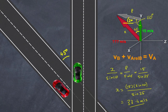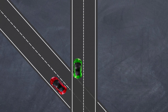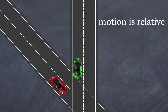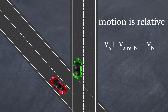So there you have it. In summary: all motion is relative — any motion that is measured is measured relative to your frame of reference. However, if there is motion in one frame of reference and also motion in another, you can determine the relative motion between those two frames using the formula shown. I hope that helps you with relative motion. I'm Paul from High School Physics Explained. Please like, share and subscribe. Take care.